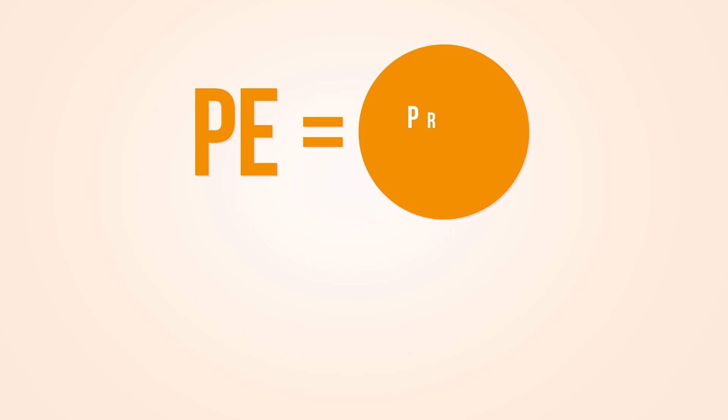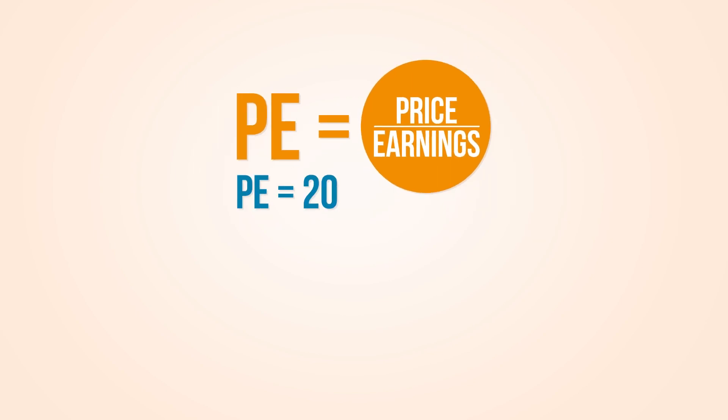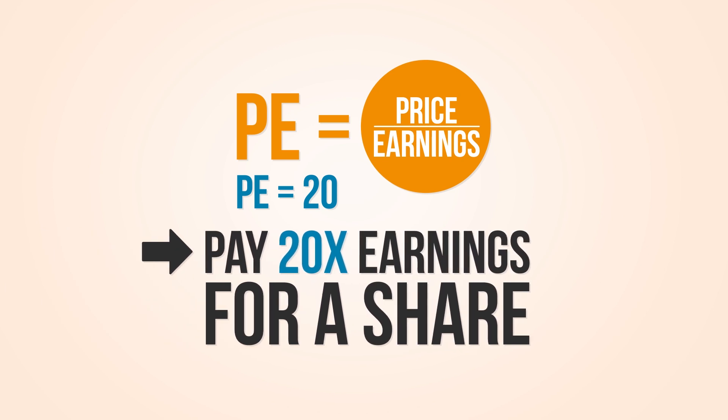First of all, what is the PE ratio? PE ratio is a company's share price divided by its earnings. A PE of 20 means a company is worth 20 times its earnings. All other things equal, low PE means undervalued stock, high PE means overvalued stock. It's simple and easy, isn't it? Or is it?